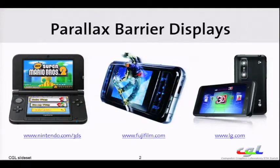They found their way mostly in handheld devices because they naturally support one viewer and also have a fixed viewing distance and viewing position. So you find parallax barrier displays in the Nintendo 3DS, in 3D compact cameras as a preview display, and also newer handhelds have them inside.